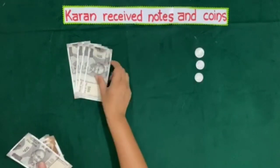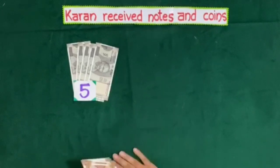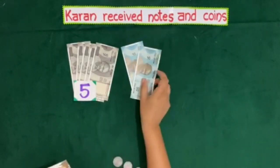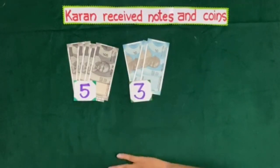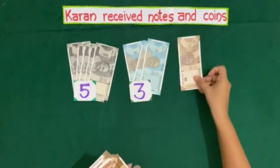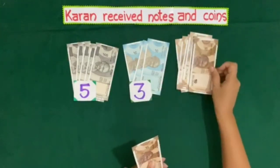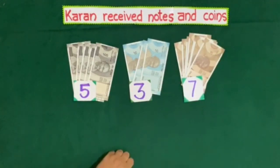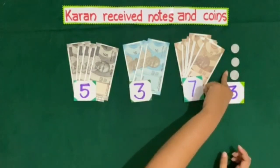Counting the Rs. 500 notes: 1, 2, 3, 4, 5. So Karan has 5 notes of Rs. 500. Next, we will make a group of notes of Rs. 50: 1, 2, 3. Karan has 3 notes of Rs. 50. Next, group of notes of Rs. 10: 1, 2, 3, 4, 5, 6, 7. Karan has 7 notes of Rs. 10. Now group of Rs. 2 coins: 1, 2, 3. Karan has 3 coins of Rs. 2.